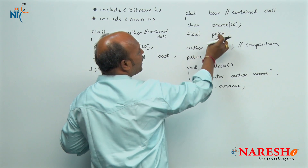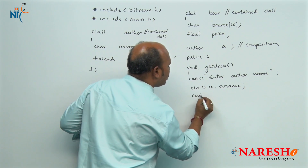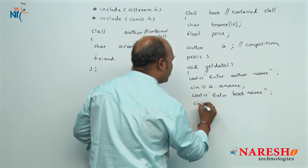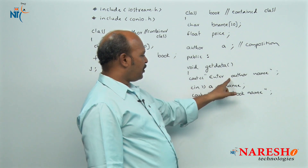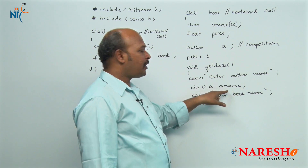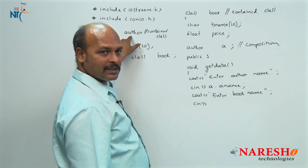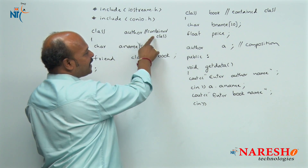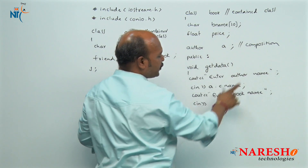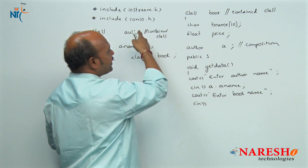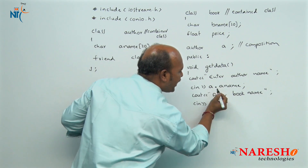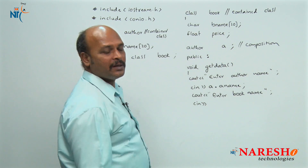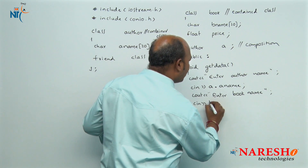Next I want to enter the book name and price. One important point: other_name is a member of other class and book is the friend class. Whenever you access container class data members from the contained class, you must use the object name of the container class — that is why we used a.a_name. But for book name, b_name is a member of the same class, so there is no need for an object name — directly use b_name.